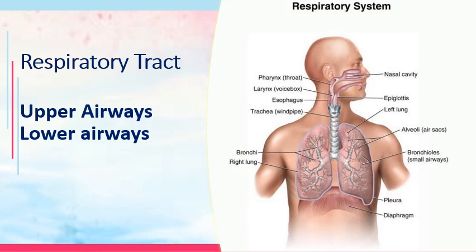Your respiratory tract is divided into two: upper airways and lower airways. For the upper airways, we have the nose, the sinuses, the pharynx — divided into nasopharynx, oropharynx, and laryngopharynx — tonsils and adenoids, the larynx (voice box), and the trachea (windpipe). For the lower airways, you have the bronchus, bronchioles, alveoli, the entire lungs, and the pleura, which acts as a viscous fluid that decreases friction of the lungs against surrounding organs during expansion.